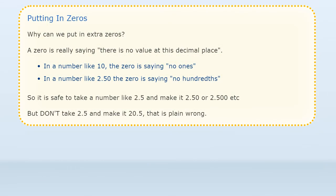Why can we put in extra zeros? The zero says there is no value at this decimal place. In a number like 10, the zero is saying no ones. In a number like 2.50 the zero is saying no hundredths.